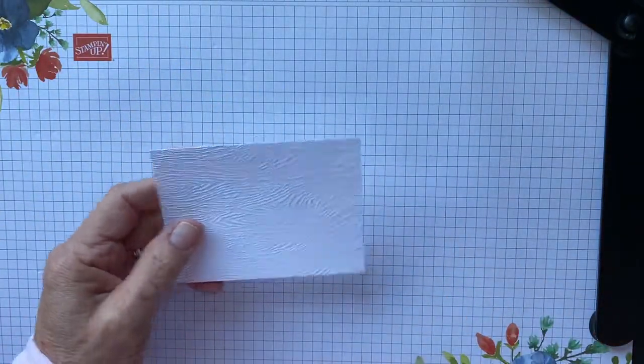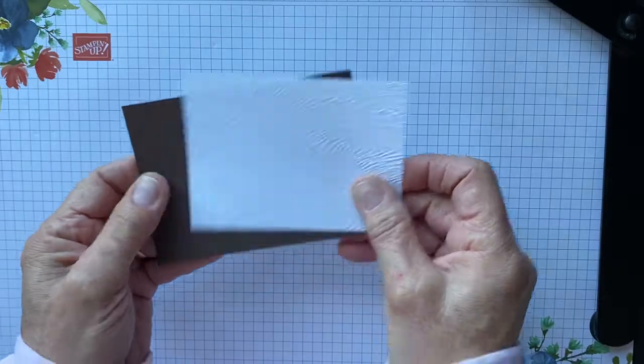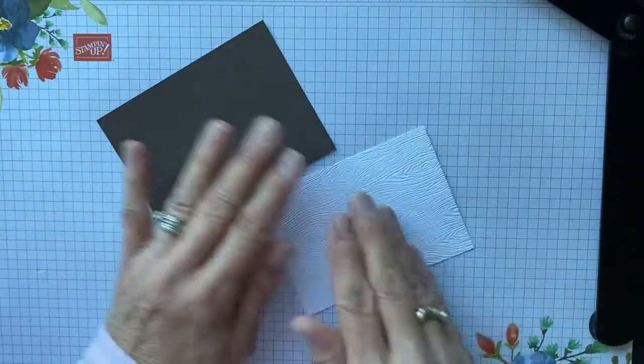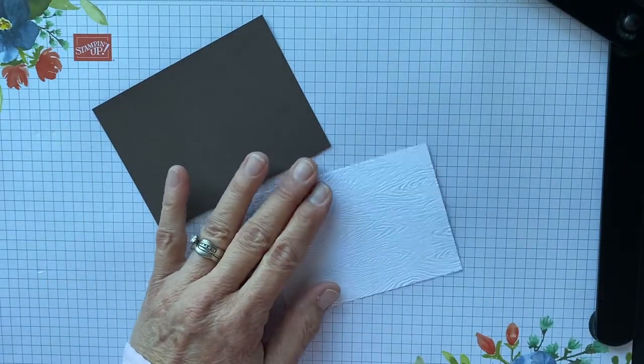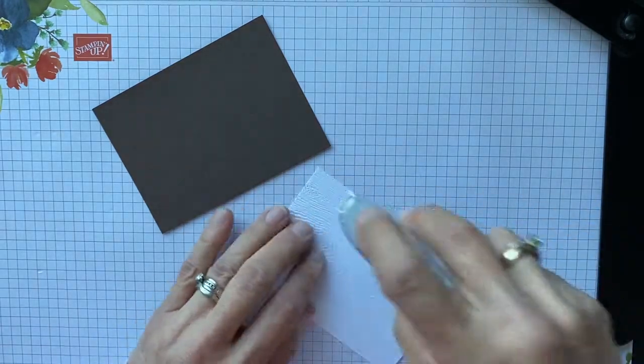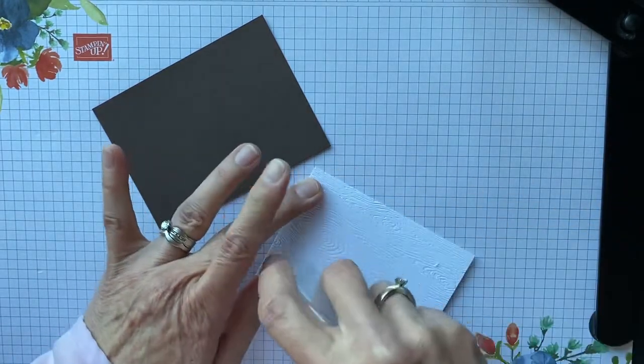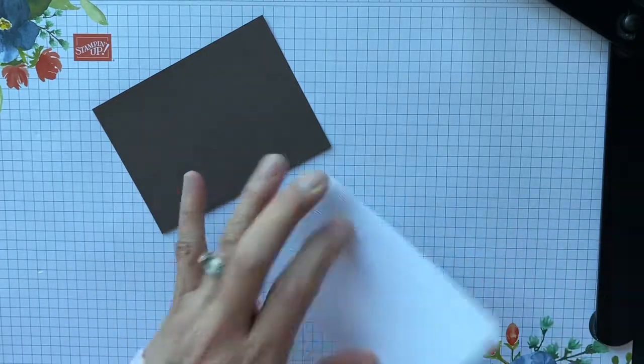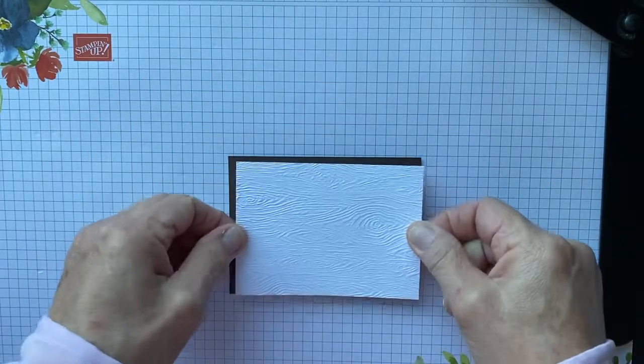And you're going to end up with this wonderful piece. I hope you can see that on camera. So we're going to go ahead and layer our card. We're going to take this textured piece and put it on the Early Espresso, and I'm going to use my tape runner, and we're going to put that on the Early Espresso.